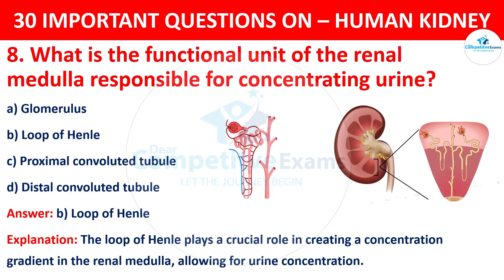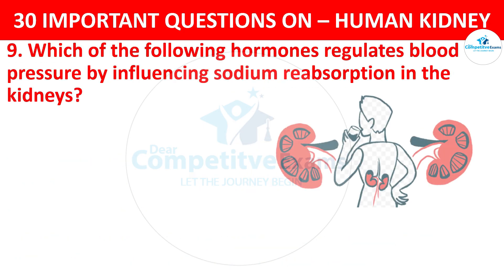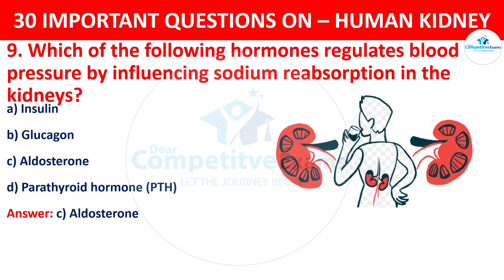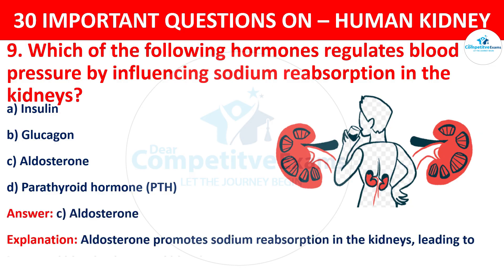Question 9. Which of the following hormones regulates blood pressure by influencing sodium reabsorption in the kidneys? Your options are: Insulin, Glucagon, Aldosterone, or Parathyroid Hormone (PTH). The correct answer is C, i.e. Aldosterone. Aldosterone promotes sodium reabsorption in the kidneys, leading to increased blood volume and blood pressure.